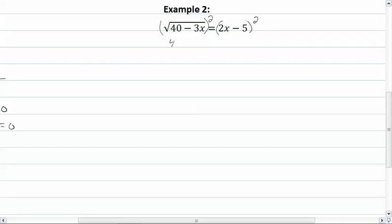And so we get 40 - 3x equal to, square the first term, which would be 4x². 2 times 5 is 10, times 2 gives us 20, so we get -20x. Square the last term, which would give us a positive 25.